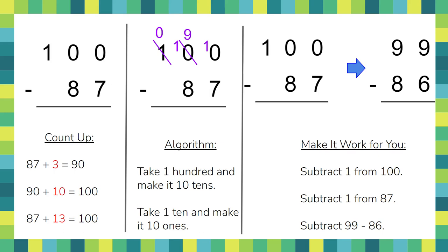If you look at the first column though — counting up — you're subtracting 100 minus 87. You can add three to 87 to get to 90, and then add 10 to get to 100. Kids who are solving it in their head often solve it that way. The last column, we subtract one from each number. Because we're subtracting one from each number, we're keeping the difference the same, but instead of taking seven from zero, when we make 100 into 99, it becomes a much easier problem to subtract 86 from 99. These are just three strategies the kids can use.